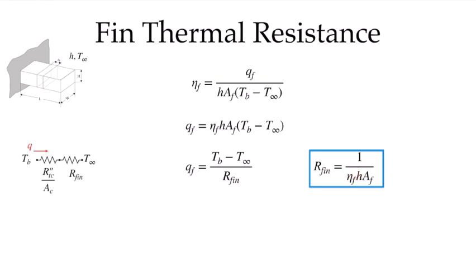Once we have the thermal resistance for a fin, we can start to look at resistance networks that involve fins. Let's imagine we have a single fin attached to a computer chip. Tb might be the maximum temperature that chip could be exposed to, and we may have a contact resistance between the fin and the chip surface. We can look up the contact resistance for those contacting surfaces, and add that resistance — given as an area-specific resistance, divided by the cross-sectional area of the base. We use the fin resistance in series with that going out to T-infinity, and evaluate the total heat transfer through that system.